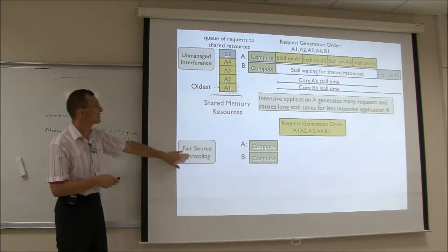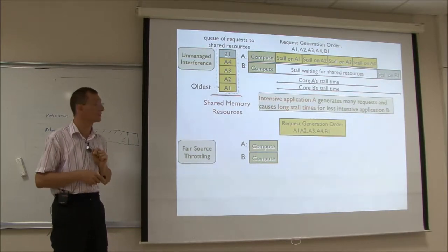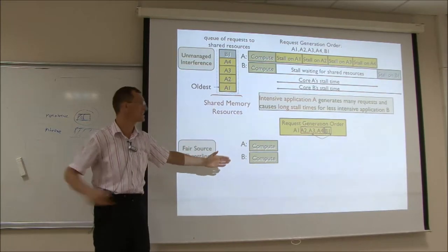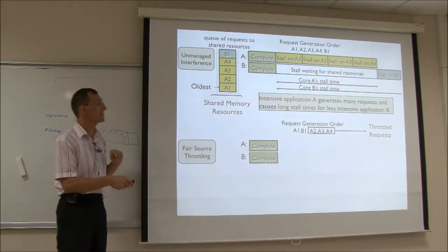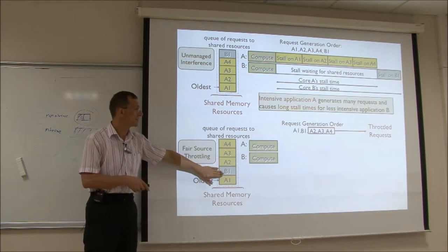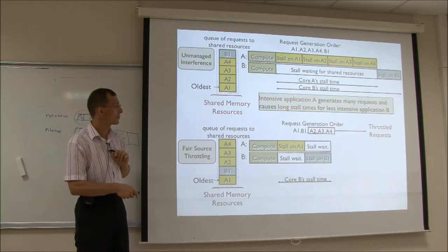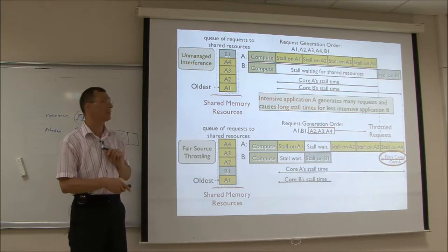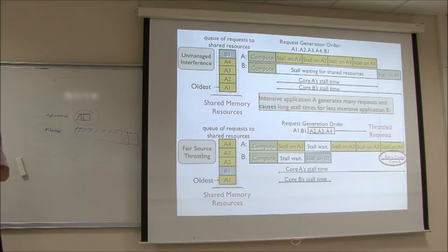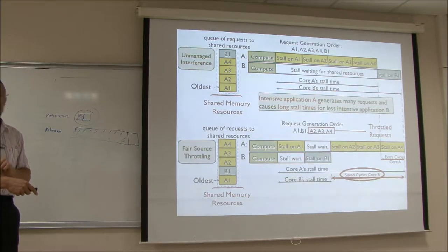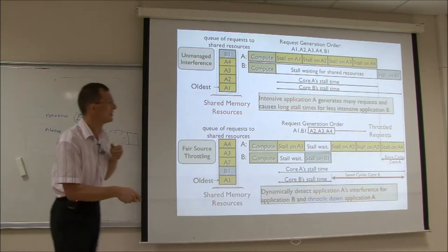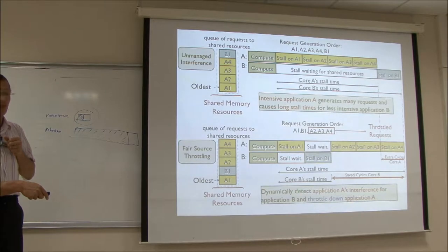The key insight with fair source throttling is: if you can figure this out, you can tweak this request generation order. The system can say, I'm going to slow down A for a while so it doesn't inject as frequently, such that B can inject its request. A is throttled such that B can inject into the system. As a result, core B's stall time will be much shorter, and core A's stall time will be longer — but you save a lot of cycles in core B. The key idea is to dynamically detect application A's interference for application B and throttle down application A, giving better system performance and fairness.